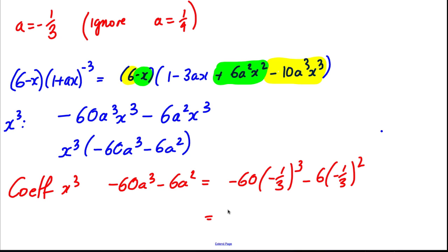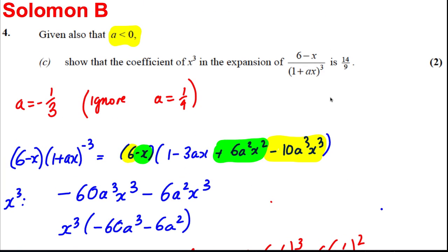And we get ourselves that the coefficient of x cubed is therefore 14 over 9. And we look up to the question here and we're asked to show it's 14 over 9, and we've done so and so we are done there.